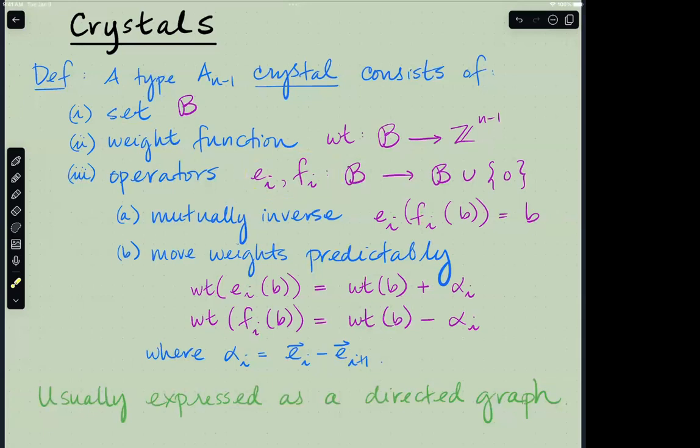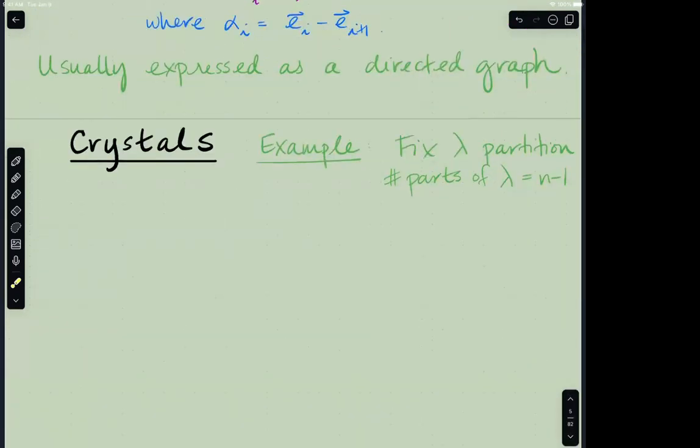So each element in this set is typically represented as a vertex in a graph, and you can evaluate a weight function on those vertices which will spit out a vector, an integer-valued vector. And the real heart of crystal theory is a pair of operators, E_i and F_i. E_i are usually the raising operators and F_i the lowering, but they are mutually inverse and so they come as a pair. And these operators have a predictable action on the weights. So if you calculate the weight of a vertex and then you raise, then this will add a bit of weight, and it adds the vector alpha_i, where alpha_i here is the difference of the two standard basis vectors, e_i and e_{i+1}.